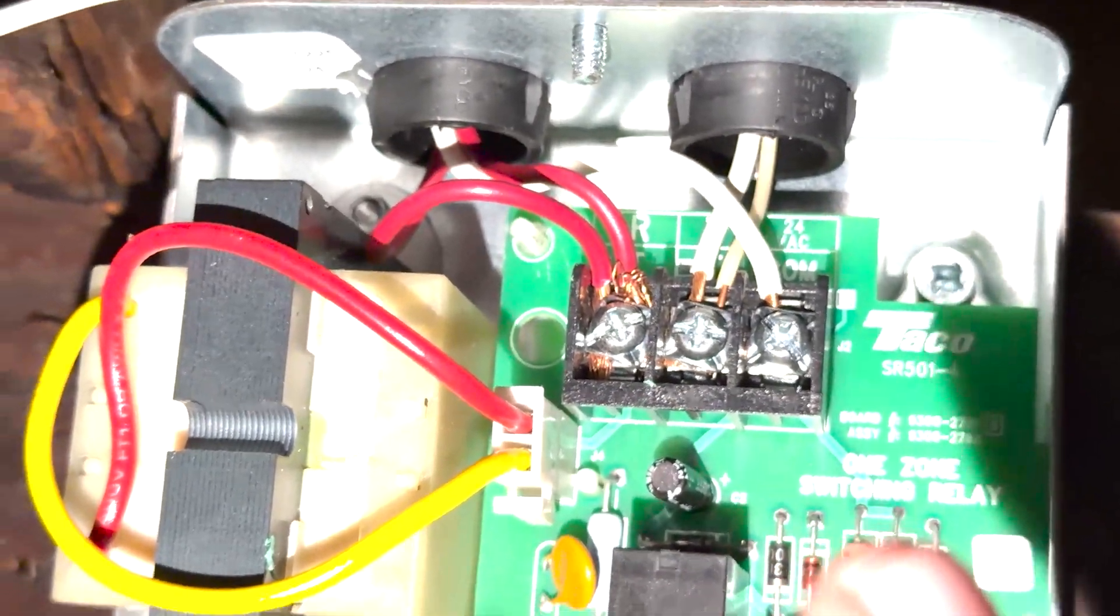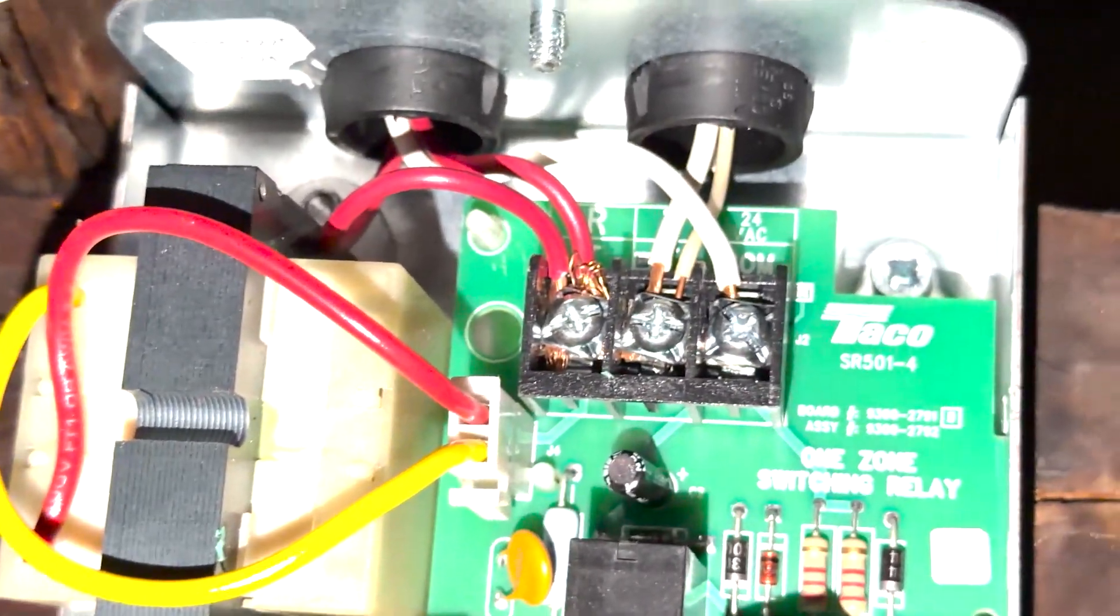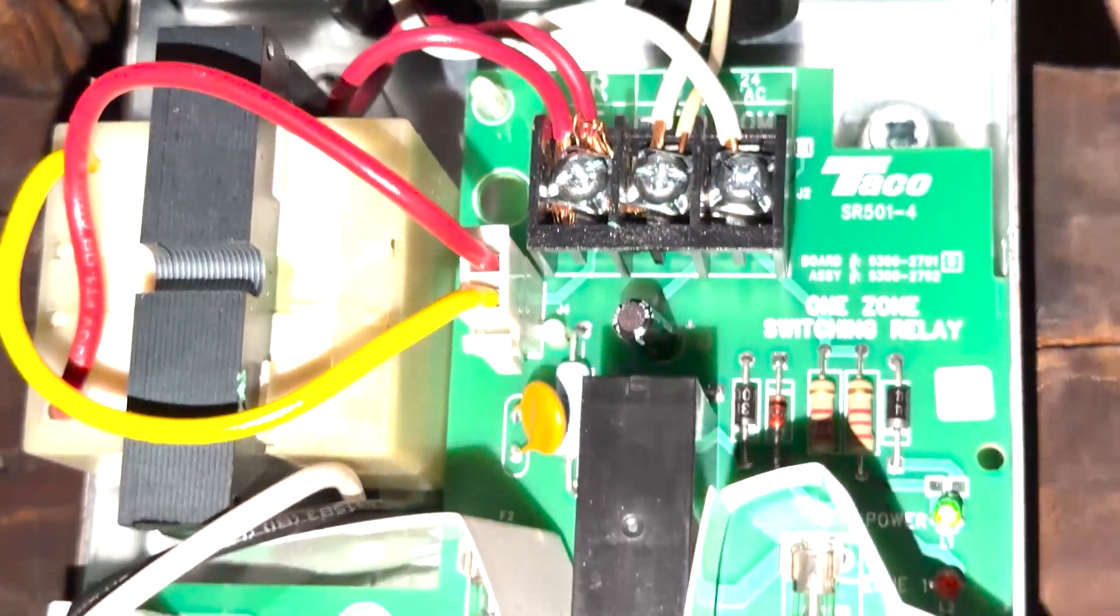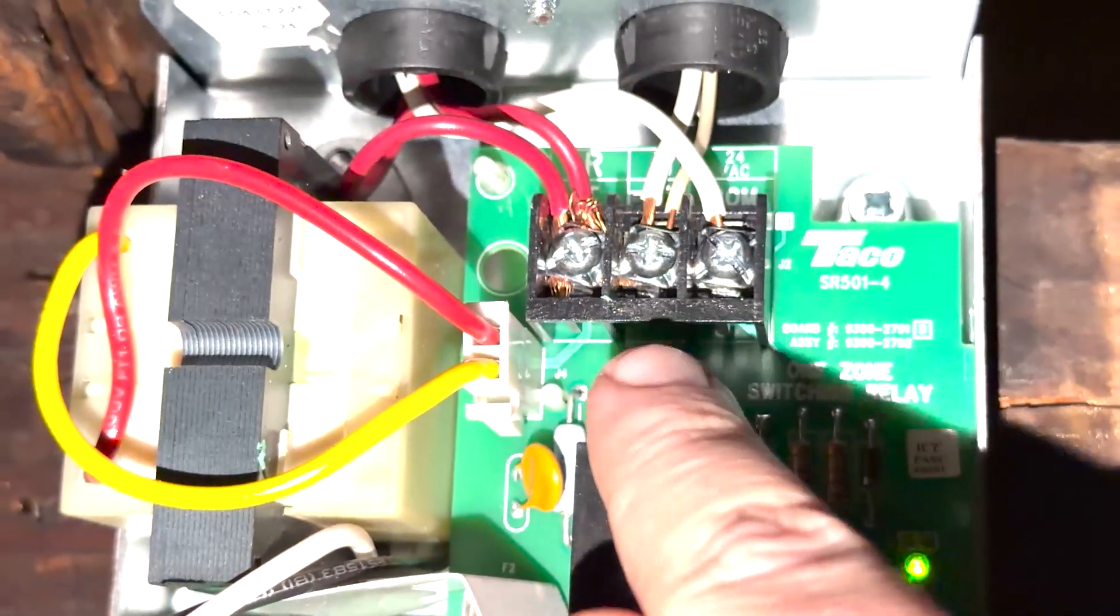Then you're going to take the wire from upstairs, the C-wire from the thermostat, and connect it to this middle terminal here.